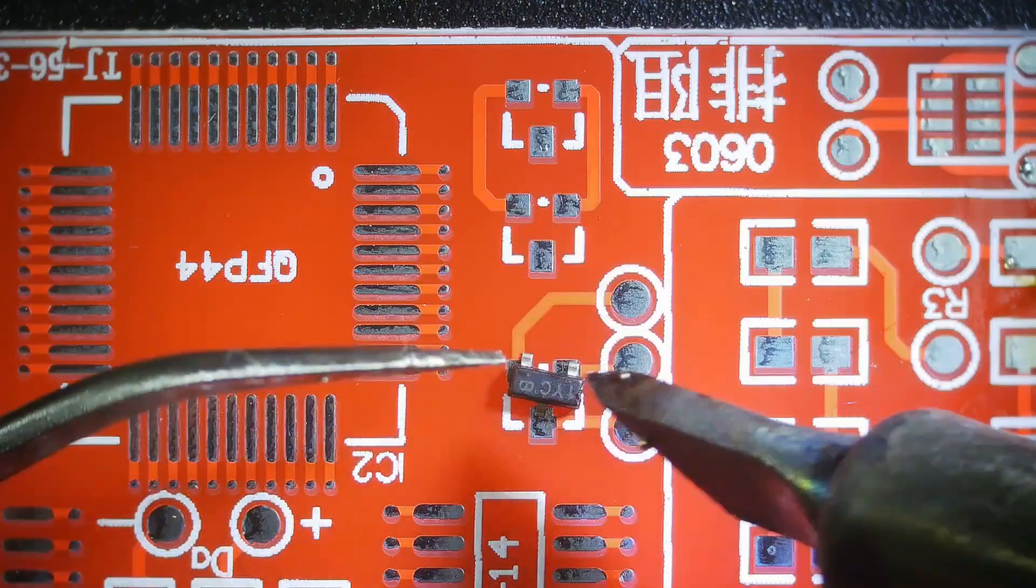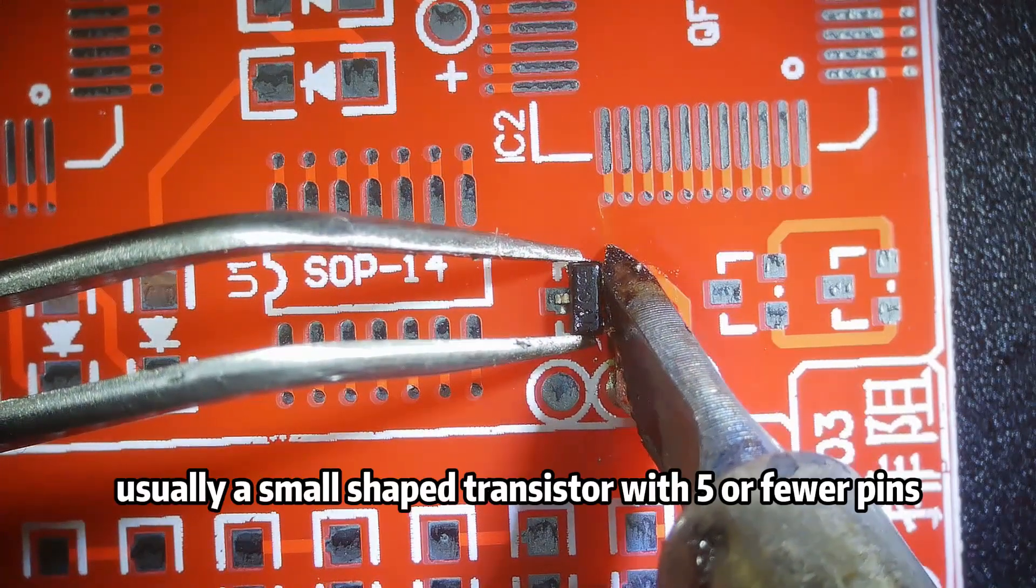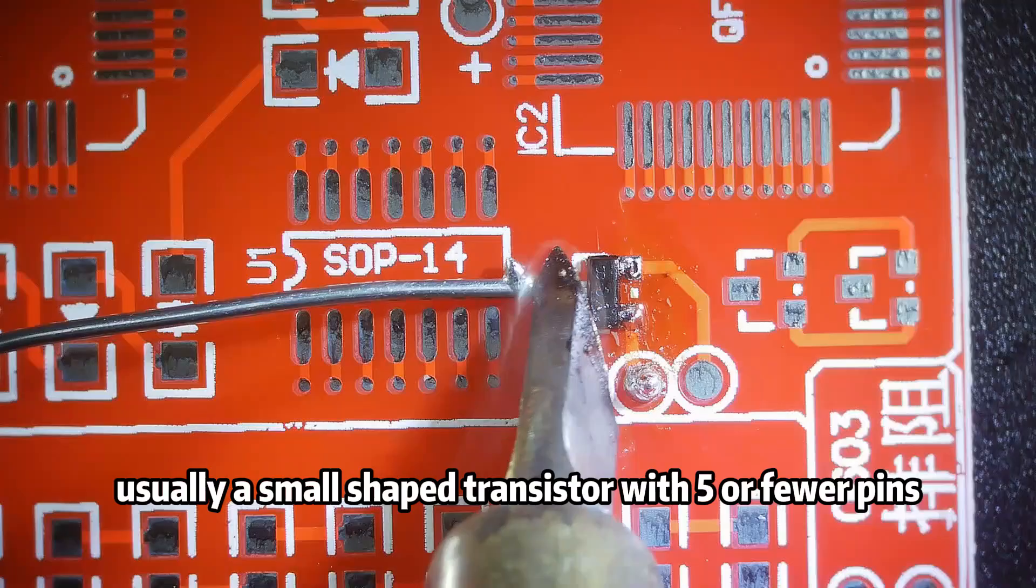SOP-2-3. This is a surface mount packaging form, usually a small-shaped transistor with 5 or fewer pins.